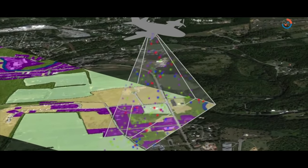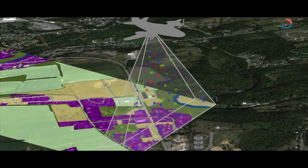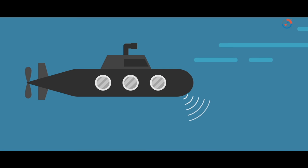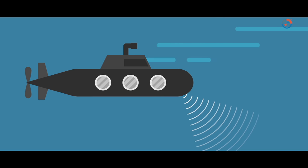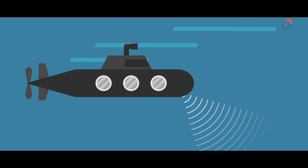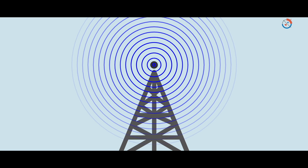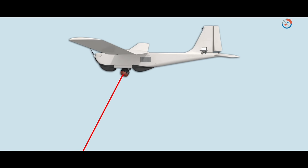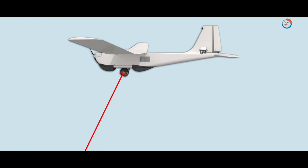This is actually how LiDAR got its name: Light Detection and Ranging. Like sonar uses sound waves to map things, and radar uses radio waves, LiDAR on the other hand uses light sent out from a laser.